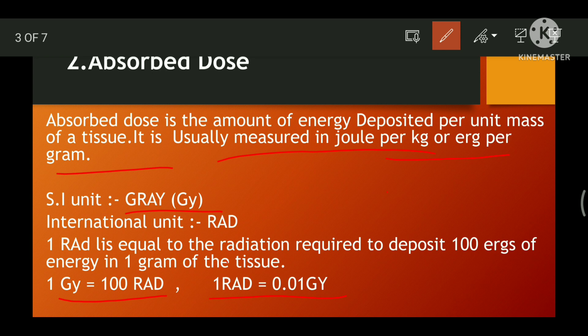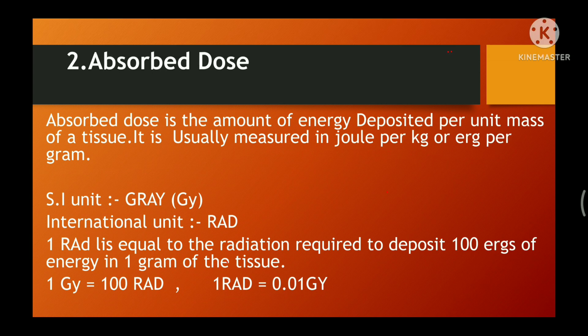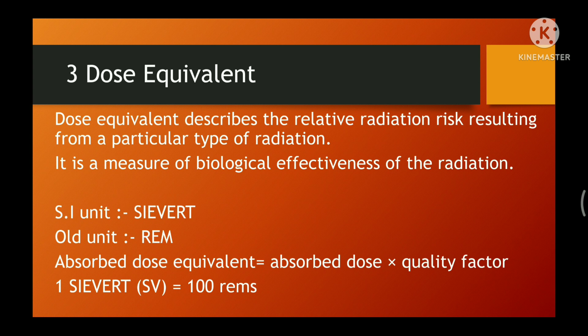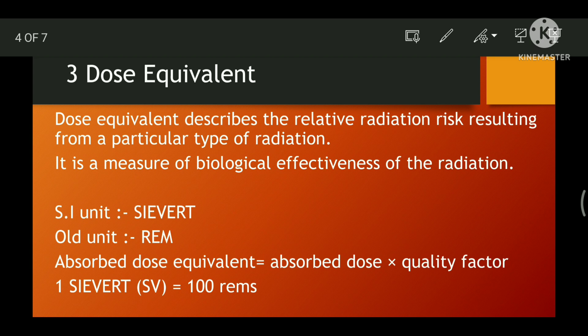The third unit of radiation is dose equivalent, which describes the radiation risk resulting from a particular type of radiation. Simply put, it is used to assess how much biological damage is expected from the absorbed dose. Different types of radiations have different damaging properties, and dose equivalent takes the damaging properties of different types of radiation into account.